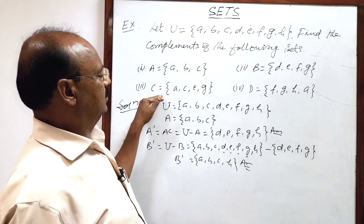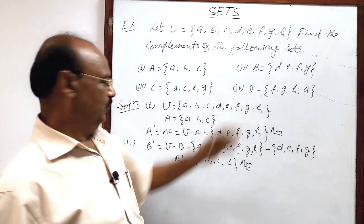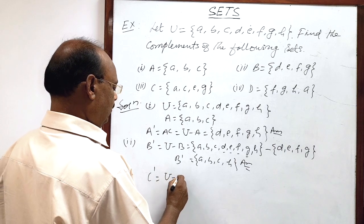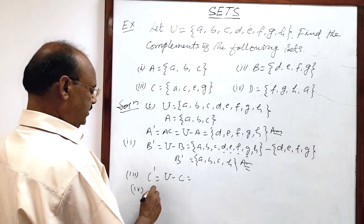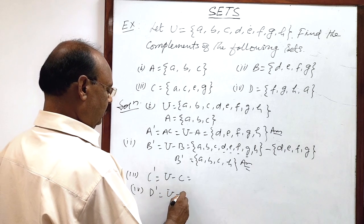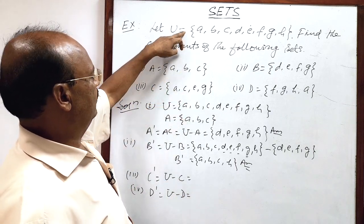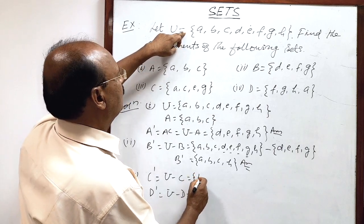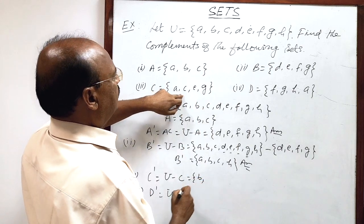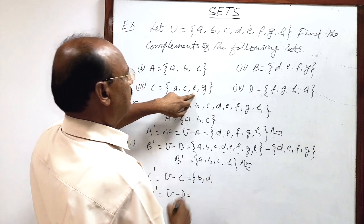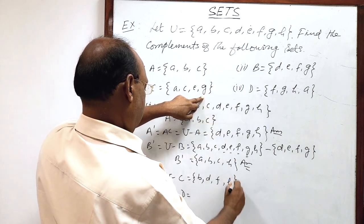The rest of the questions are exactly similar. Complement of C is universal set minus set C. If elements of set C are removed from the universal set, then the remaining elements form C complement. Going through each element: a is removed, b remains, c is removed, d remains, e is removed, f remains, g is removed, h remains. So this is C complement.